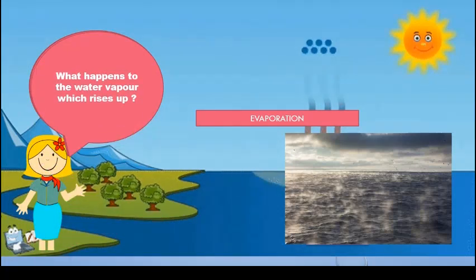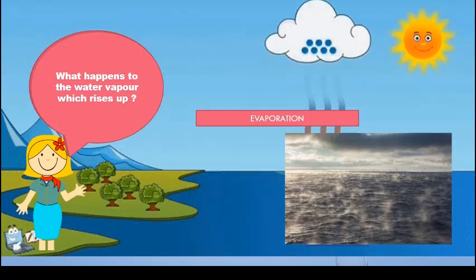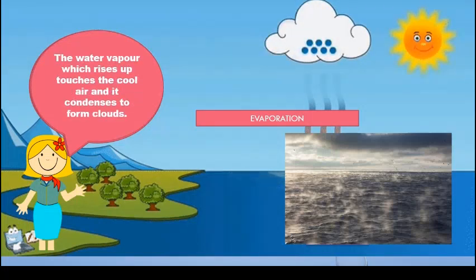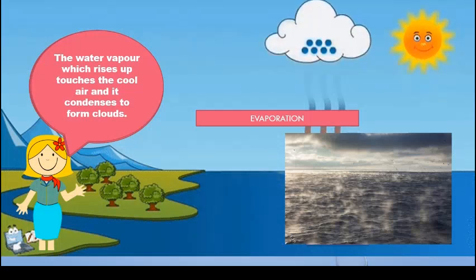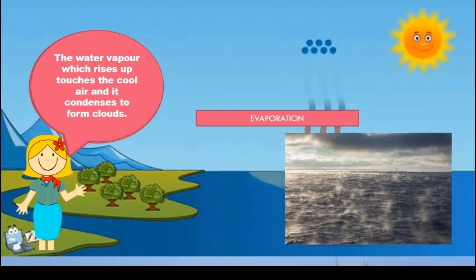What happens to the water vapor which rises up? The water vapor rises up into the cool air and condenses to form clouds.